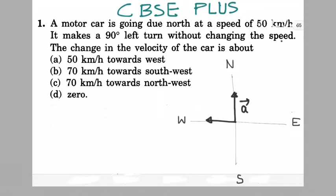Four options are given. So there are two velocities given. One is the speed of 50 km/h due north, so magnitude is given and direction is given. Another velocity is same speed without changing the speed and a new direction. So in this question we have to find the change in velocity.